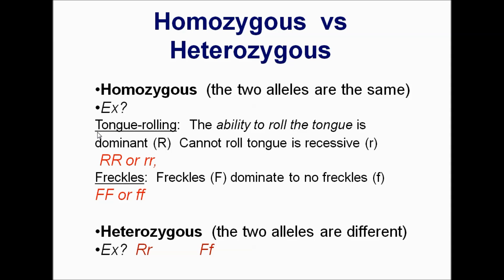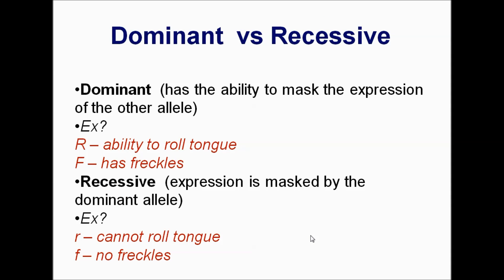Homozygous, two alleles are the same. So tongue rolling, if you can roll your tongue, that's a dominant trait, capital R. If you can't roll your tongue, that's recessive, little r. So for homozygous for that trait, you could either be two capital R's or two little r's. Freckles, freckles are dominant, capital F. No freckles, little f. So homozygous for that trait could either be capital F, capital F, or little f, little f. Now heterozygous means different. So for those both traits, you could only be big R, little r, or big F, little f. That's just to learn that terminology.